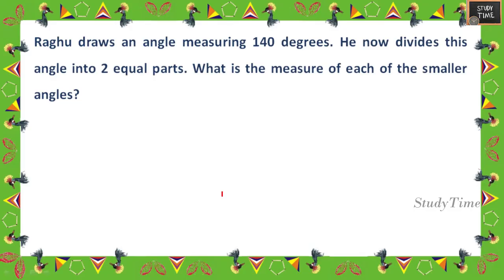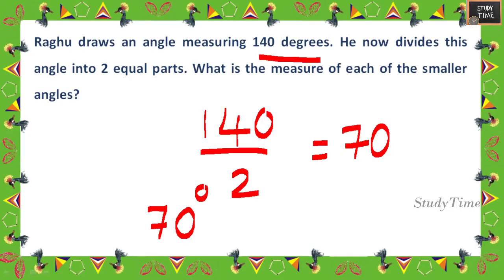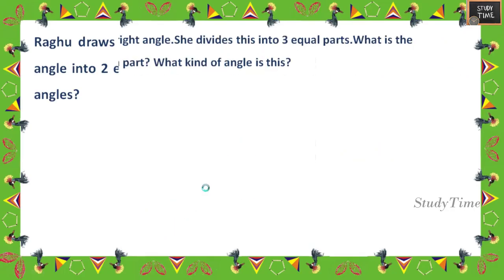Ragu draws an angle measuring 140 degrees and divides it into two equal parts. What is the measure of each of the smaller angles? 140 ÷ 2 = 70 degrees. The answer is 70 degrees. Make sure you mark the degree symbol.